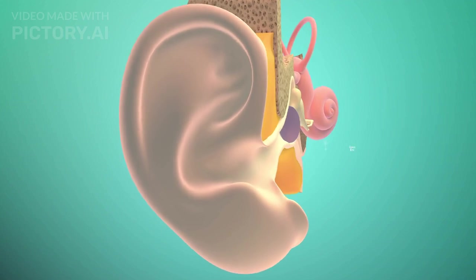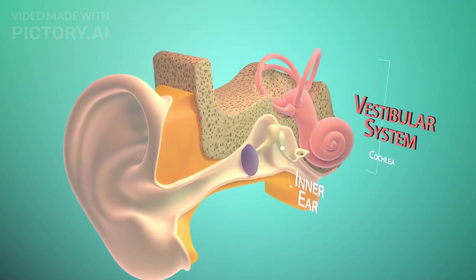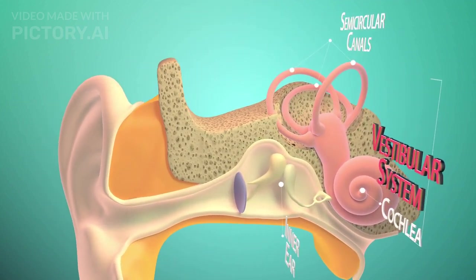The inner ear comprises the cochlea, a spiral-shaped structure filled with fluid, and the vestibular system, which is essential for balance.